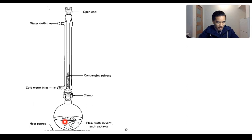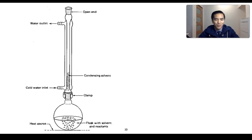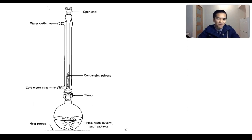One of the other components is what we call anti-bumping granules, which are sometimes referred to as boiling chips. They are added to prevent a phenomenon known as bumping. Bumping is essentially the process where you get the formation of very violent vapor bubbles, which can explode and cause solvents and liquids to shoot through the condenser. The anti-bumping granules essentially allow the liquid to boil less violently and keep the process in a more controlled fashion.